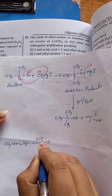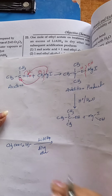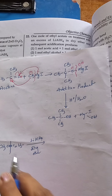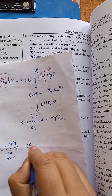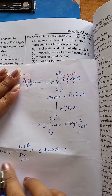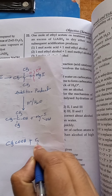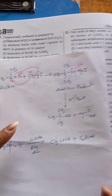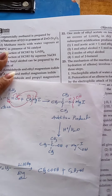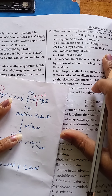Ethyl acetate is undergoing reduction in presence of lithium aluminum hydride in dry ether. When these two undergo reduction, exactly here the bond involves in breakage: CH3-COO-C2H5 gives CH3-COOH (acetic acid) plus C2H5-O. Adding hydrogen, we get C2H5-OH as final product. So 1 mole of acetic acid and 1 mole of ethyl alcohol is formed. The answer is the first one.